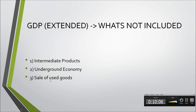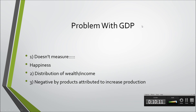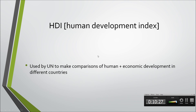Problems with GDP: first, it doesn't measure happiness. Second, the distribution of income is uneven — it doesn't reflect inequality. Third, it ignores negative byproducts of increased production such as pollution or traffic congestion. Because of these limitations, there are significant issues with relying on GDP alone as a measure of welfare.